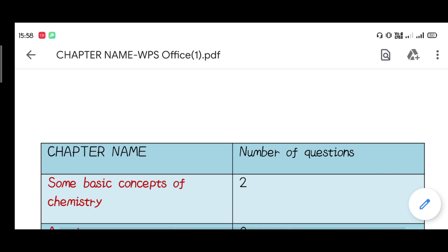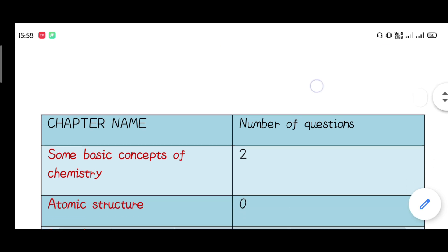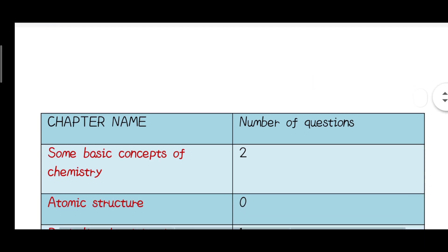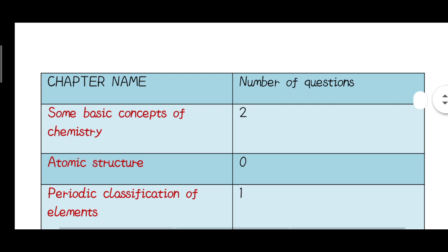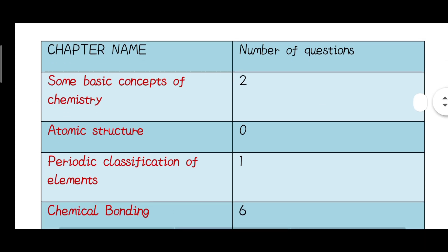Now let's look at the chapter-wise chemistry breakdown. Chapter 1 covers some basic concepts of chemistry. Periodic classification of elements has 2 questions. Atomic structure is one of the most important chapters in chemistry.